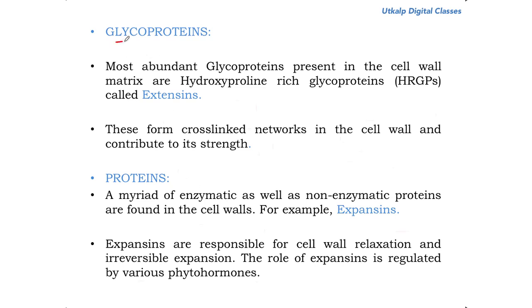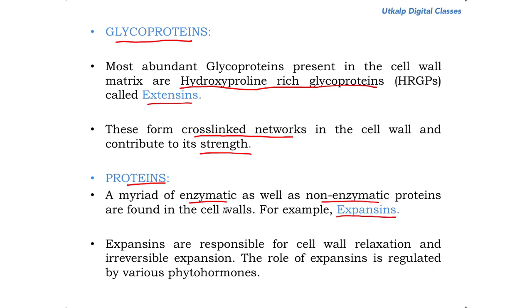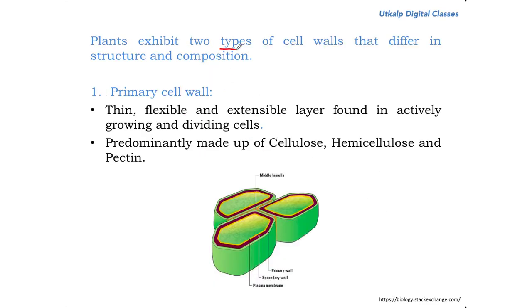Last but not least, we have glycoproteins. The most abundant glycoproteins in the cell wall matrix are hydroxyproline-rich glycoproteins called extensins. These form cross-linked networks in the cell wall and contribute to its strength, though their precise role is still not fully known. One important protein found in cell walls is expansin, which is responsible for cell wall relaxation and irreversible expansion. The role of expansins is regulated by various phytohormones.